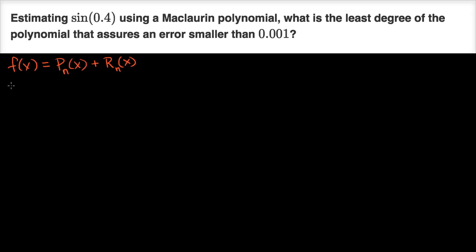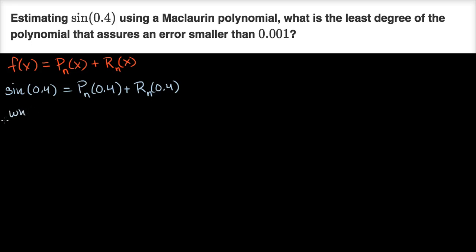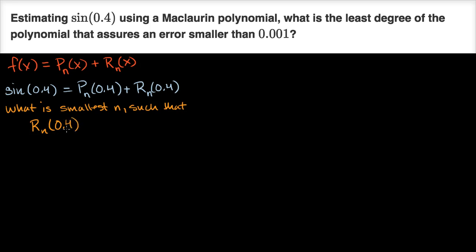Using the specifics of this problem, we can say: sine of 0.4 equals our nth degree Maclaurin polynomial evaluated at 0.4, plus whatever the remainder is for that nth degree Maclaurin polynomial evaluated at 0.4. What we really want to figure out is: what is the smallest n such that the remainder of our nth degree Maclaurin polynomial evaluated at 0.4 is less than 0.001?